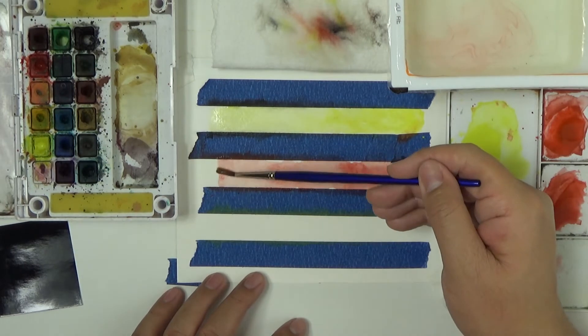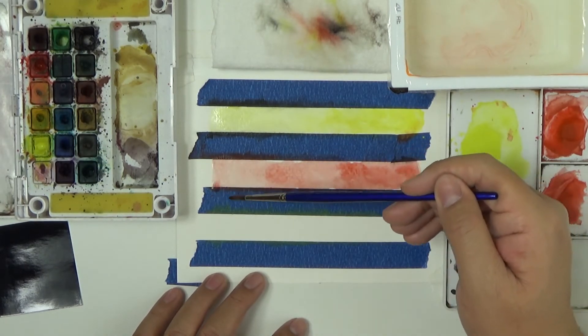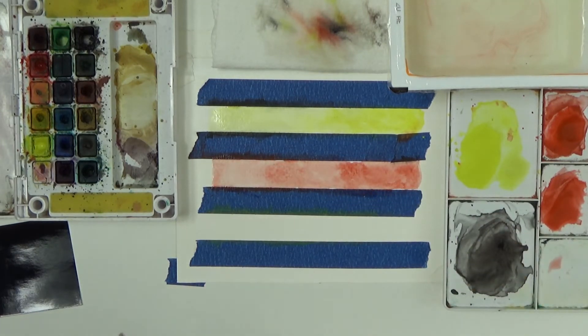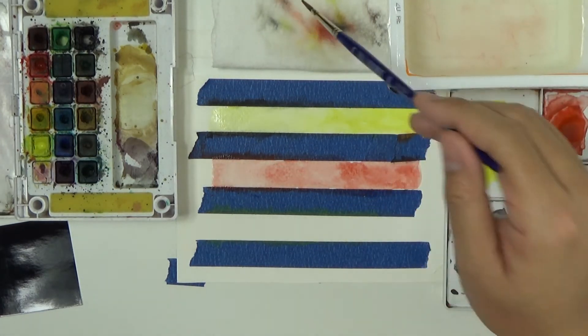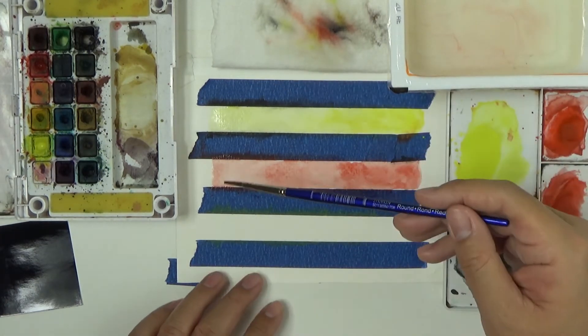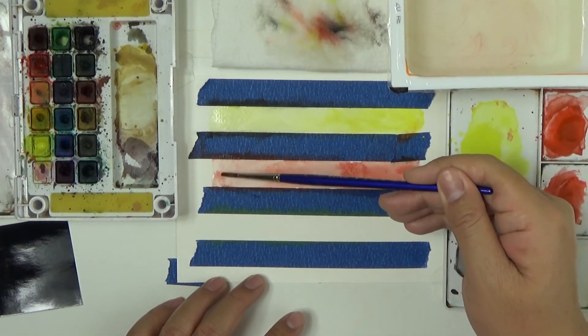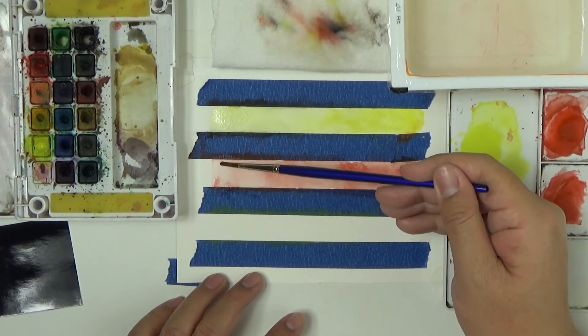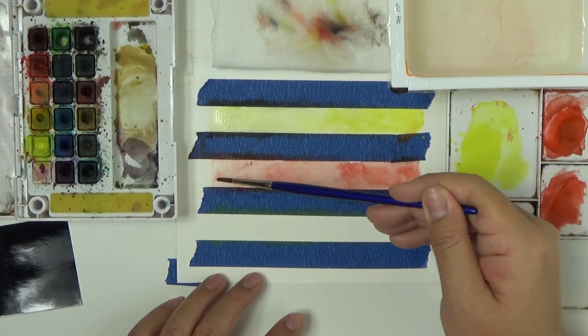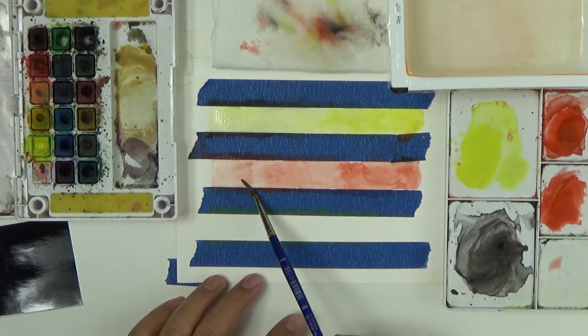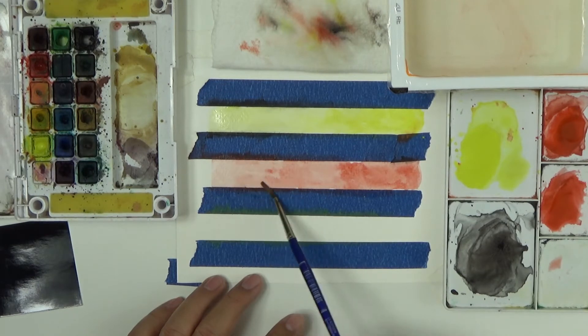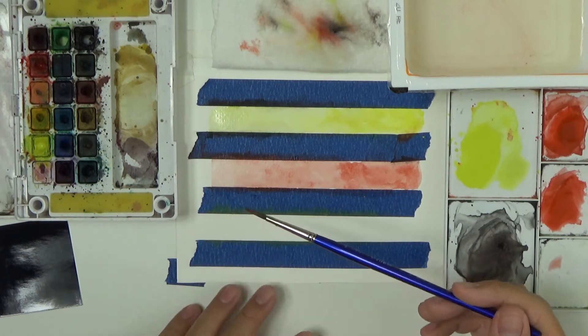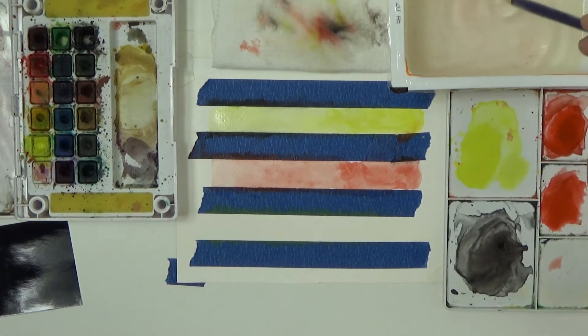I'm going to spread this out a little bit more. Notice how much I'm diluting that paint. I'm going to remove some of this paint so that I can bring the value of that section a little bit lighter. Your towel is going to act as an eraser. It removes water from the brush, and then the brush in turn removes a little bit of paint from the paper.